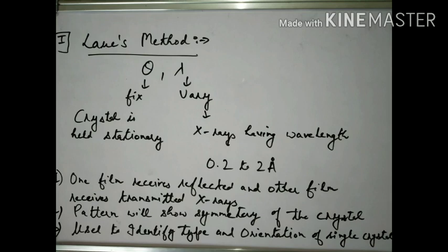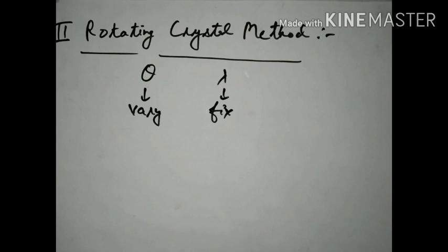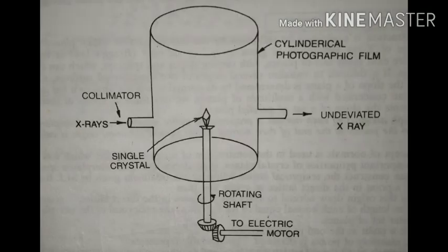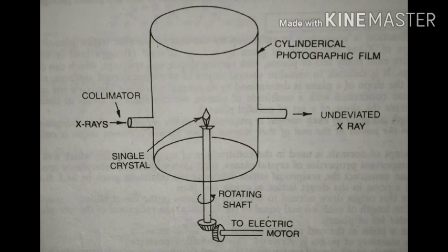The second method is the rotating crystal method. By rotating the crystal, the angle theta is varied. In this method, theta varies but the wavelength is fixed. In the experimental setup, X-rays fall on the crystal, which is attached to a rotating shaft. This allows rotation of the crystal. A cylindrical photographic film surrounds the crystal. The X-rays that satisfy 2d sin θ = nλ contribute to the diffraction pattern, which is recorded on the cylindrical film.